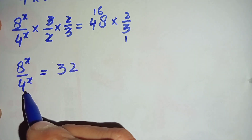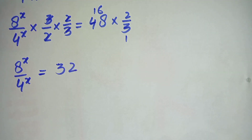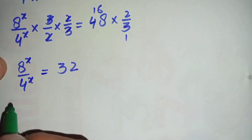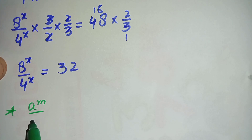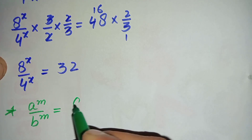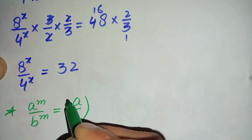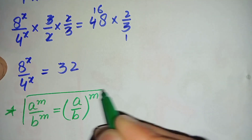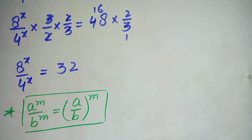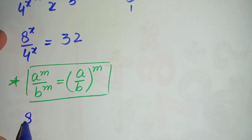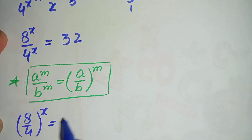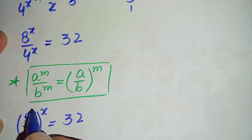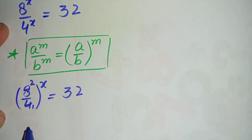Looking at the left hand side, the numerator and denominator have the same power x. So we will use the exponent division formula: A raised to power m divided by B raised to power m equals (A/B) raised to power m. Applying this, the left hand side becomes (8/4) raised to power x, and since 8/4 simplifies to 2, we get 2 raised to power x.